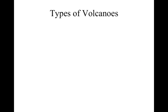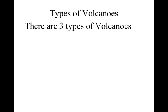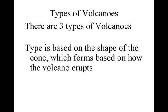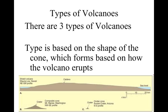Our last topic today is the types of volcanoes. There are three types and they all depend on how they're formed — specifically the shape of the cone, which forms based on how the volcano erupts. The three types are: the shield volcano, which is flat and wide like a shield laid on the ground — generally the biggest but flat in shape; the composite cone, also called strato volcanoes; and cinder cones, which are the smaller ones.